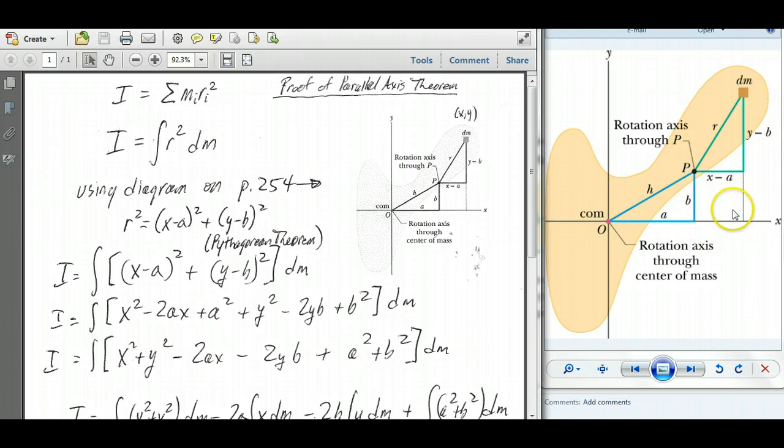So the rest of the diagram, if we let the distance in the x direction from the center of mass to the axis of rotation in the x direction be a, and in the y direction be b, then the distance from the center of mass to the axis of rotation is h. And using Pythagorean theorem, we know that h squared is equal to a squared plus b squared.